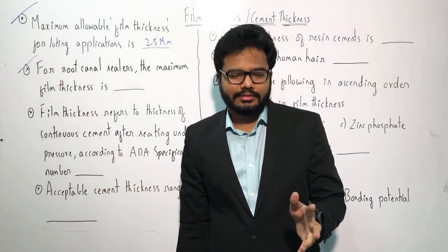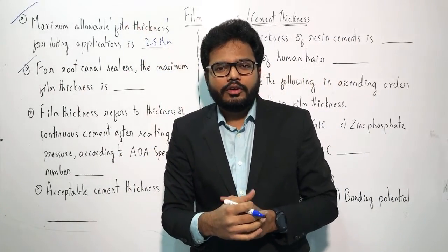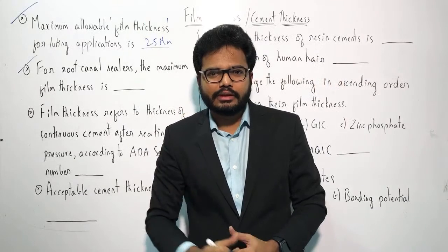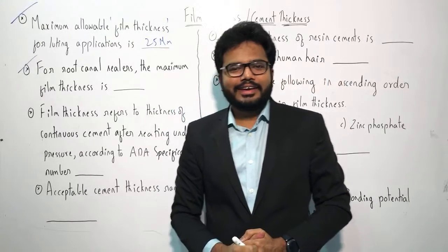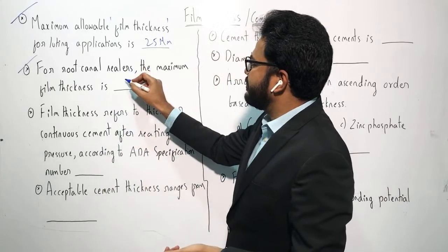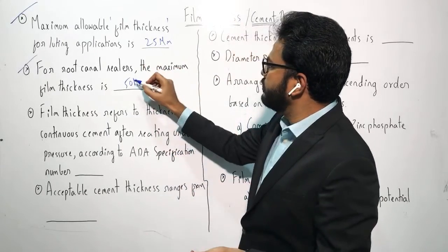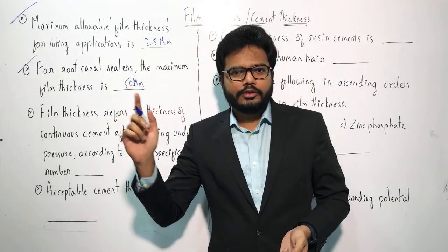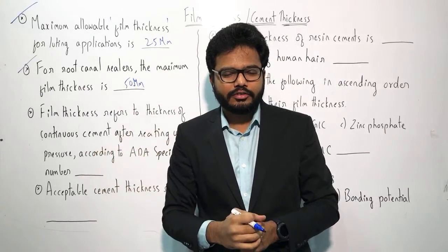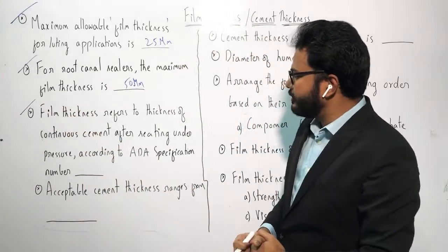Now, for root canal sealers, what is the maximum film thickness? Root canal is a costly procedure, so just double the luting value — the maximum film thickness for root canal sealers is 50 microns. There can be variation, but the maximum is 50 microns.